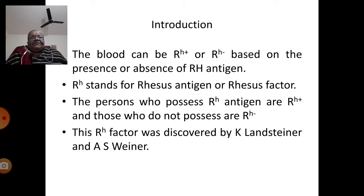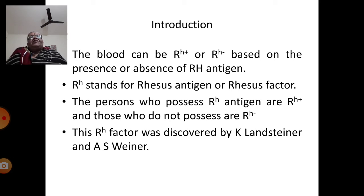The Rh factor was discovered by K. Landsteiner and A.S. Wiener. I'll talk about Wiener's contribution a little later. So if the blood group is A positive, it means blood group A and Rh positive; A minus means blood group A and Rh negative. Like that, we will have A+, A−, B+, B−, and so on.